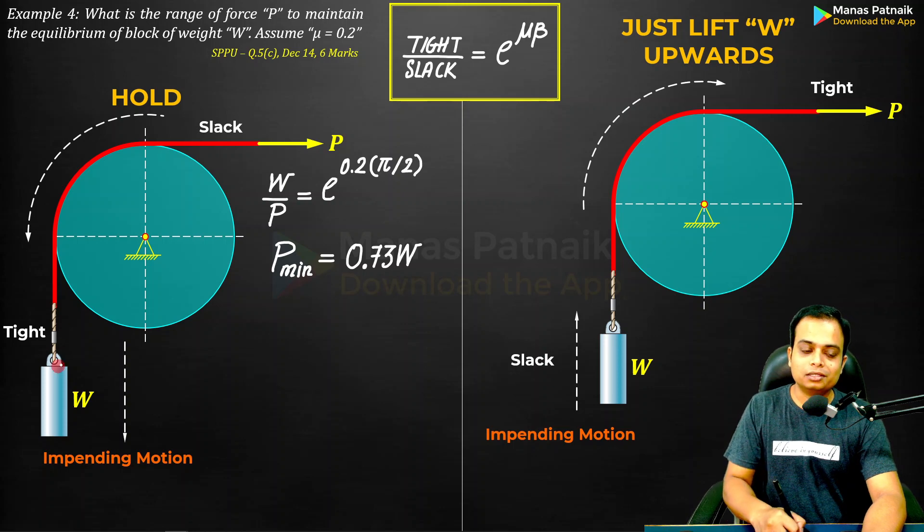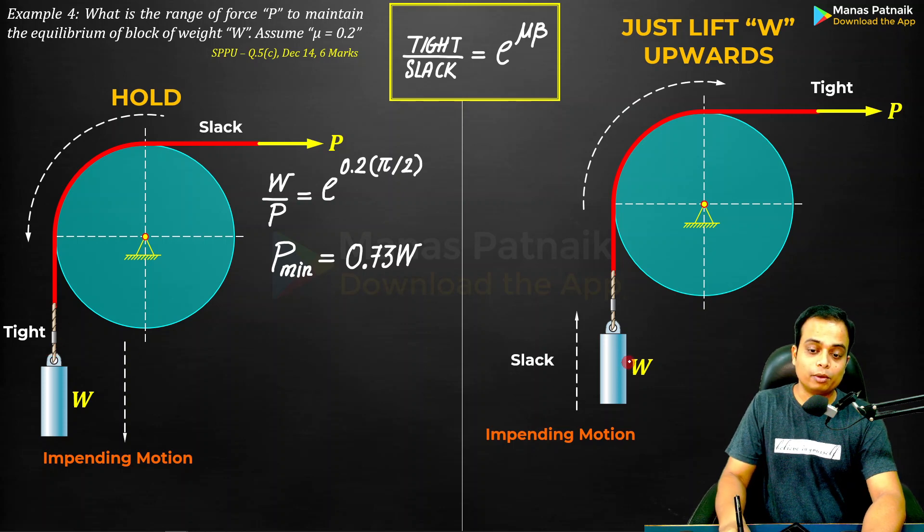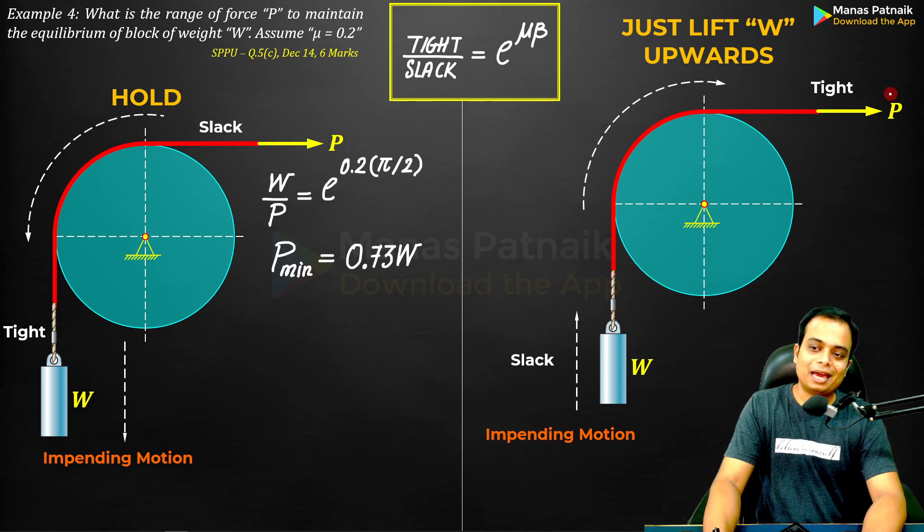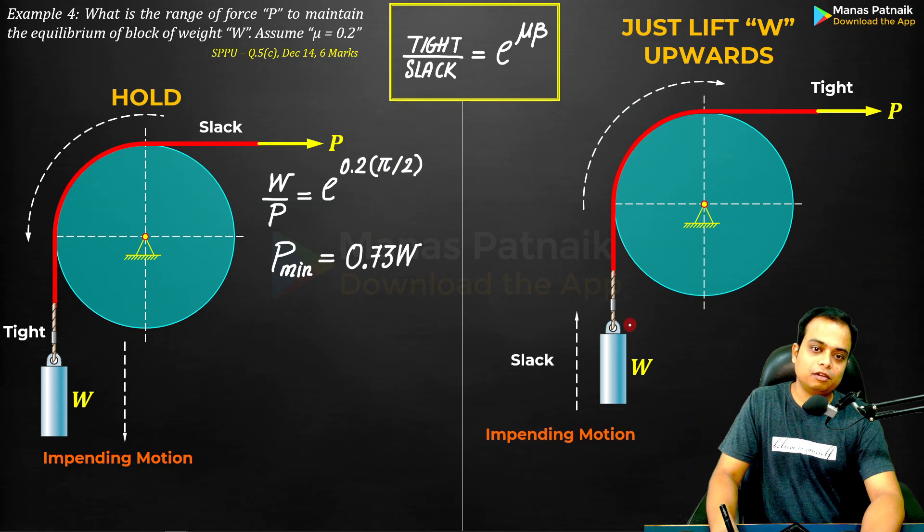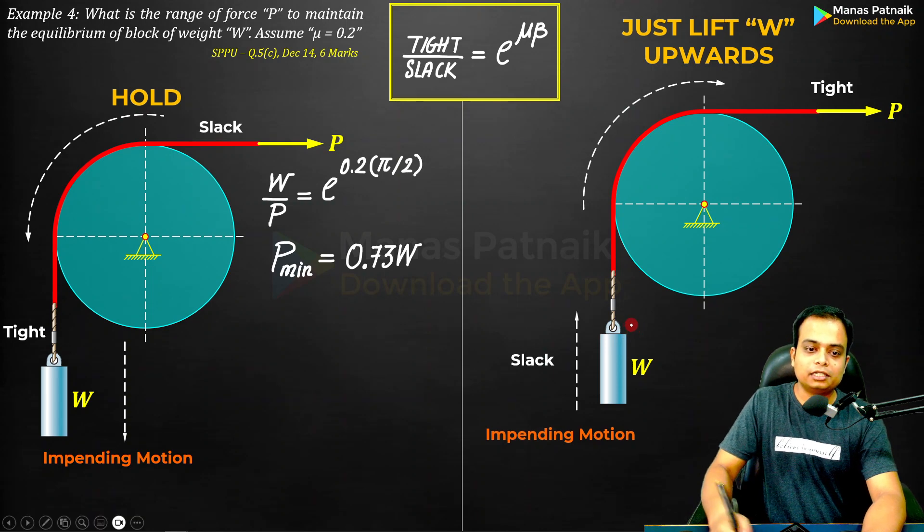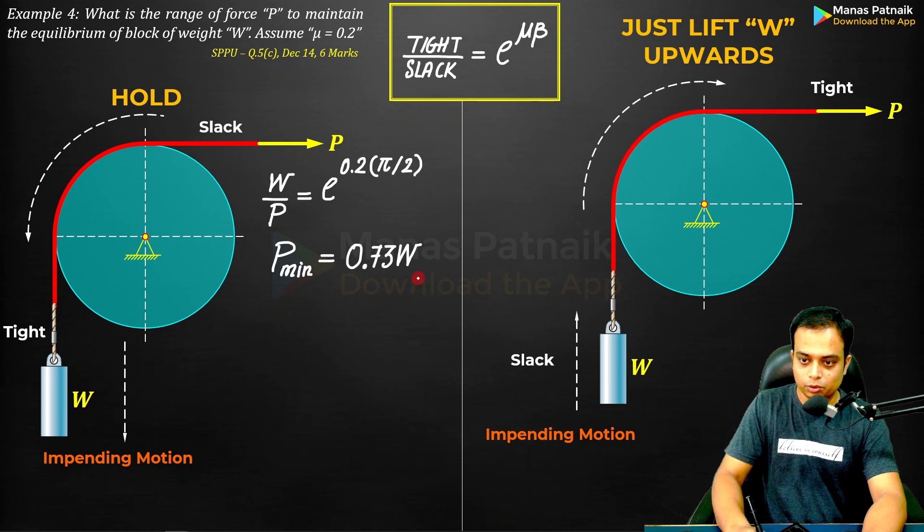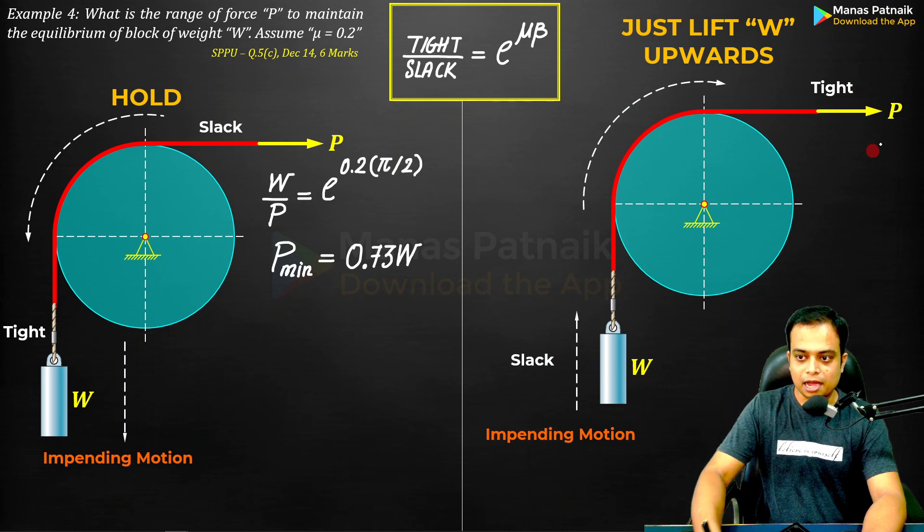A lesser value is required to hold the system in equilibrium. But if you want to lift this block, or if you want to make sure that you apply enough force so that the block just lifts, in that case a larger amount of force, a force of a larger magnitude would be needed. So what you need to do is again tight by slack, P over W.